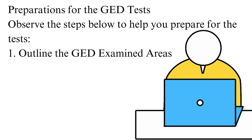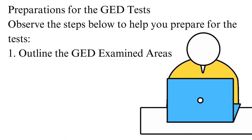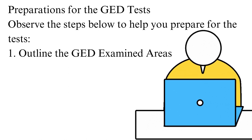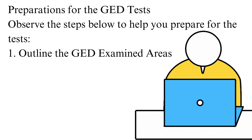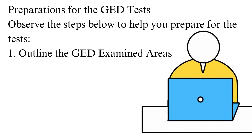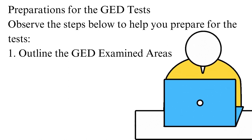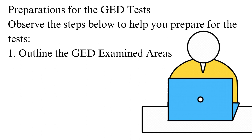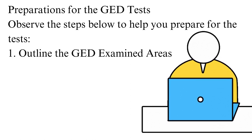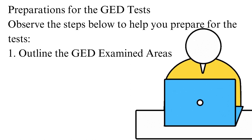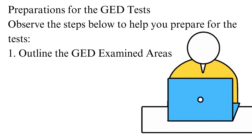Math usually has constructed answer questions, while writing requires essays. The five categories include science, social studies, reading, mathematics, and writing. Science covers three sections: life, physical, and earth and space science. This paper takes 90 minutes to complete with long multiple-choice questions.